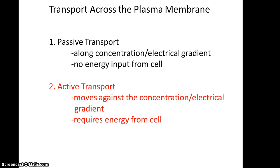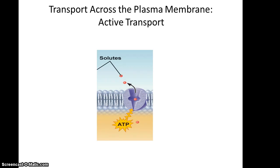Then there is active transport, which is basically the opposite of passive transport. It moves the substance against the concentration or electrical gradient, so it requires energy from the cell. With active transport, an ATP molecule — the energy currency of the cell — is broken down to ADP and an inorganic phosphate, releasing energy that allows an integral protein to take a molecule from low concentration and release it to the side where that molecule is at high concentration. So active transport goes from low to high, requiring an energy source.